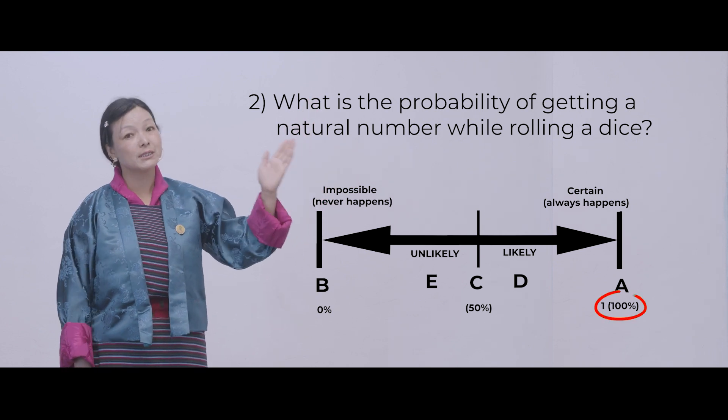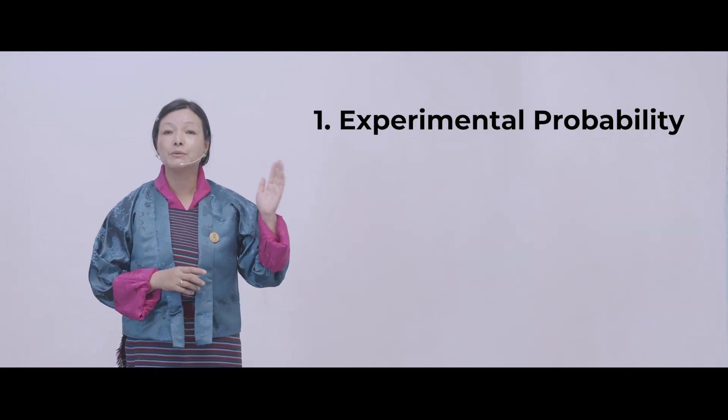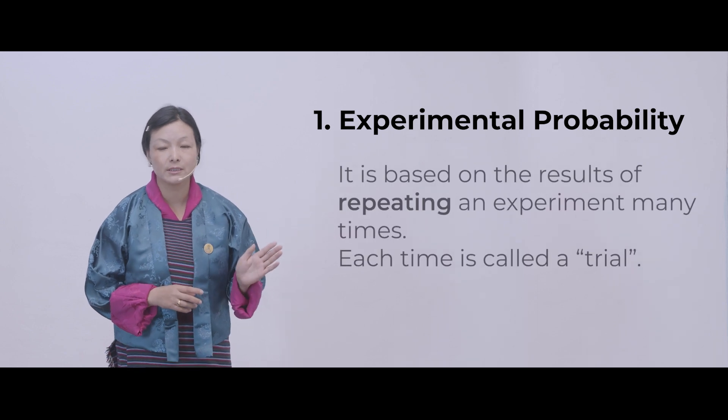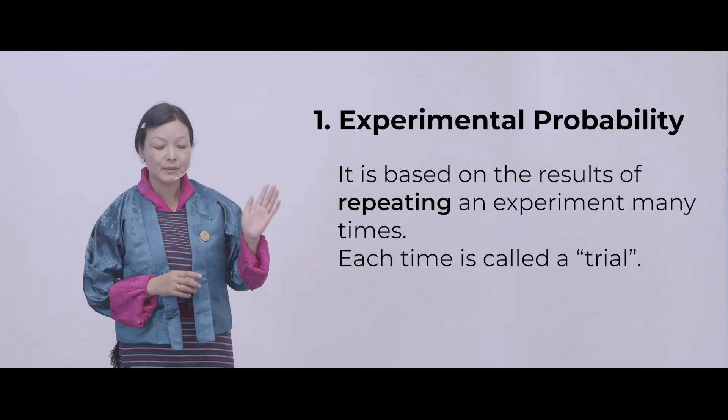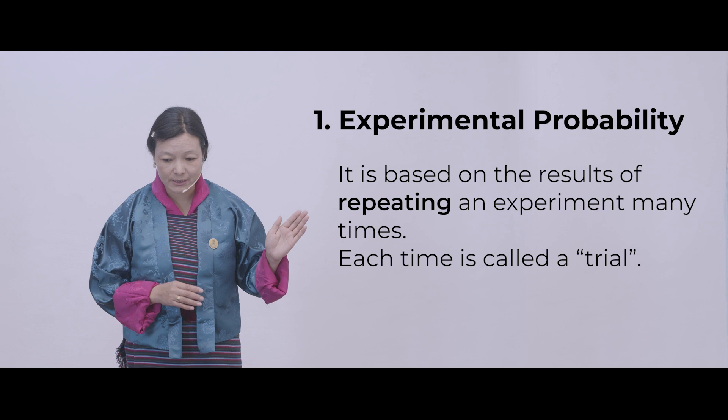That means it is certain. Well, children, there are two types of probabilities. First, let's go through experimental probability. Experimental probability is based on the result of repeating an experiment many times. Each time is called a trial.